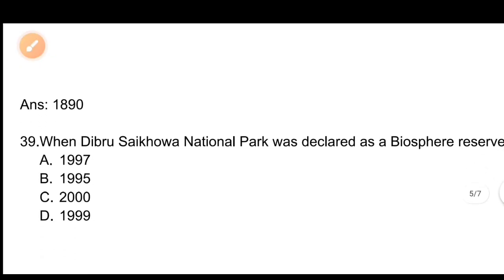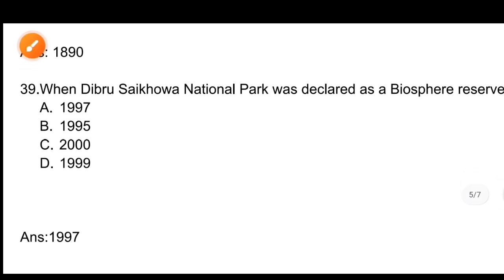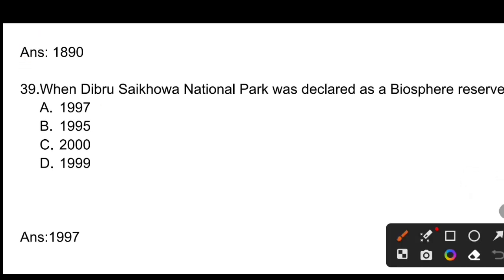Question number 39: When was Debru Saikowa National Park declared as a Biosphere Reserve? The correct answer is 1997. Debru Saikowa National Park was declared as a Biosphere Reserve in 1997.